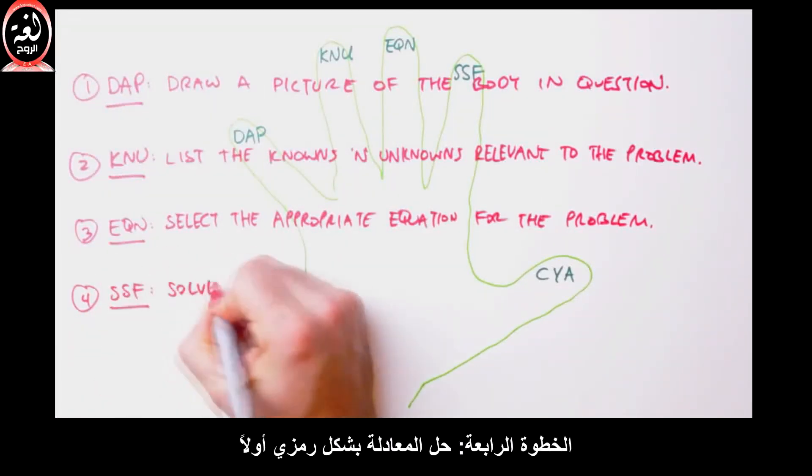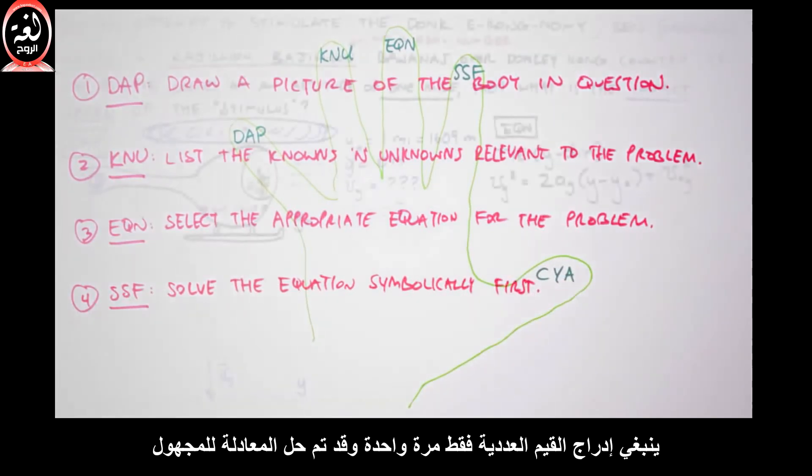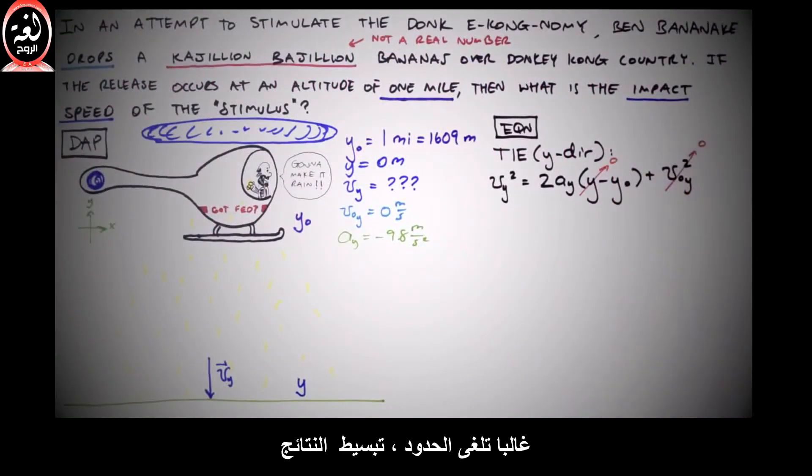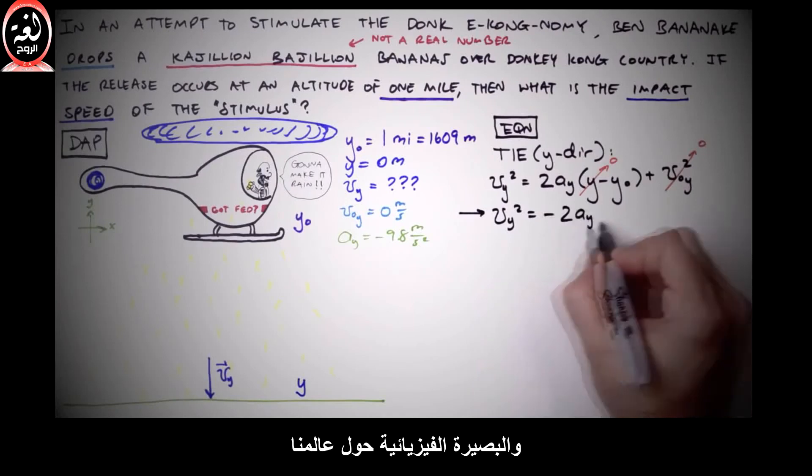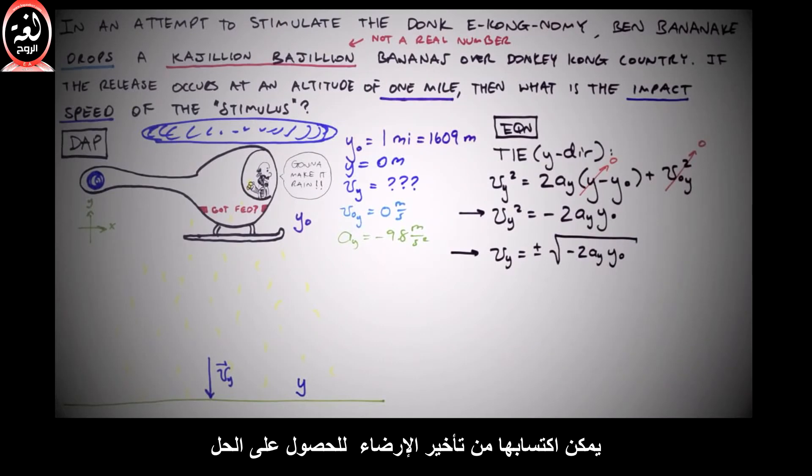Step 4. Solve the equation symbolically first. Numerical values should only be inserted once the equation has been solved for the unknown. Terms will often cancel, simplifying solutions, and much physical insight about our world can be gained from delaying the gratification that comes with plugging and chugging.